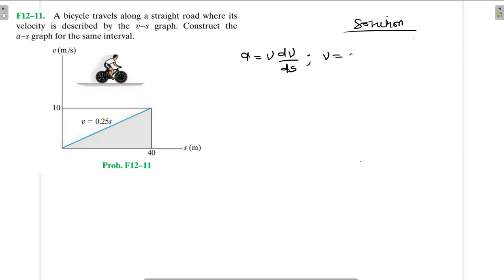Our velocity is equal to 0.25s, this is s. And our dv/ds will give us - if we were to find the derivative of 0.25s, what does it give us? It just gives us 0.25, right?